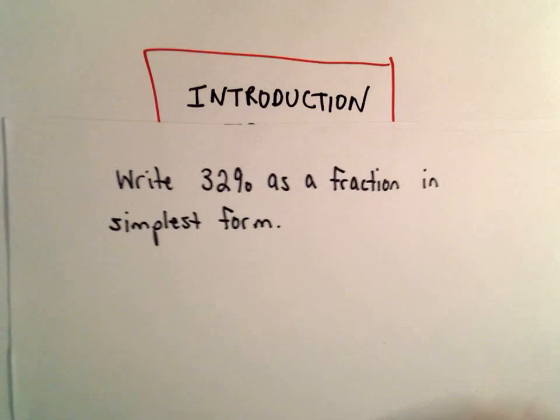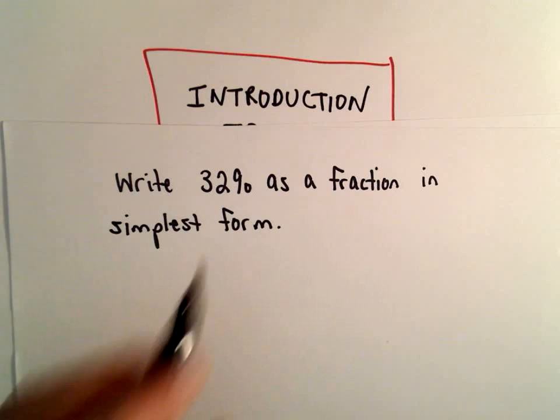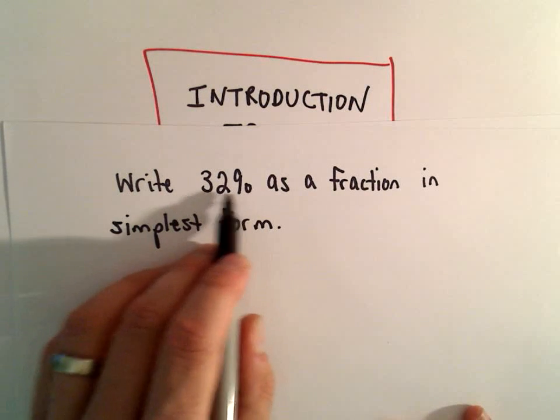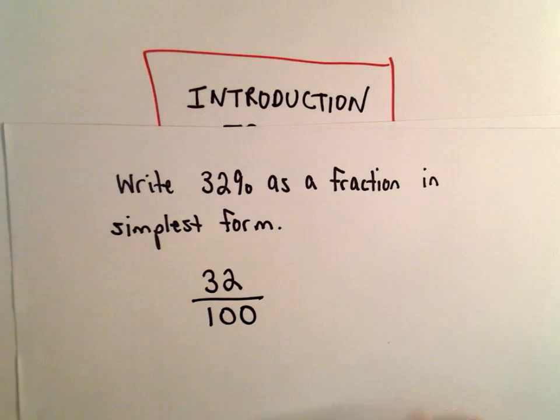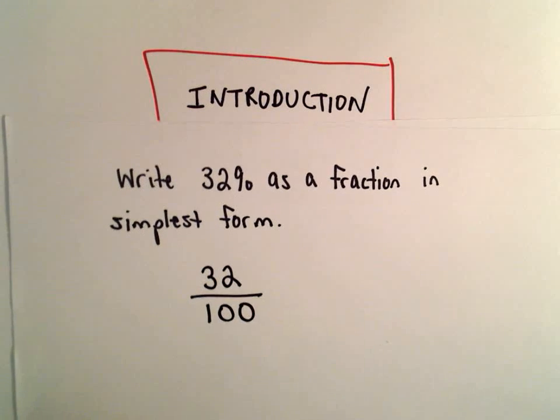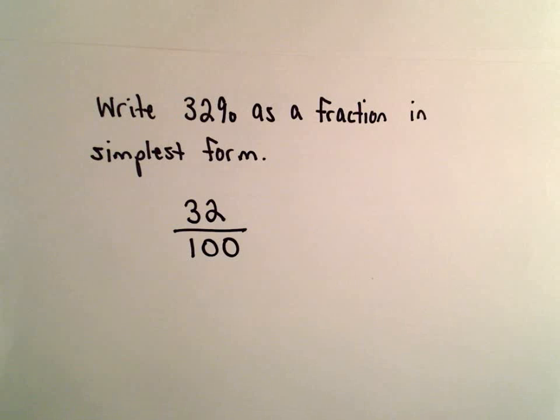So to write a percent as a fraction, we take whatever the number is, in this case it's 32, and we just simply put that over 100. And that's always what we do. At that point, it's just a matter of reducing it.